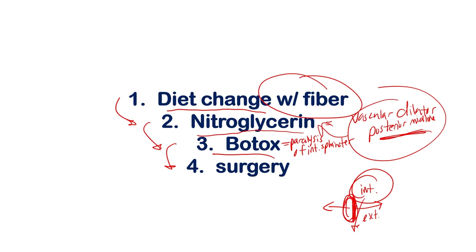The last option is surgery, used in really extreme cases. You don't need to know the specifics for Step 1, but basically they take a flap of skin, cut it in a way that covers up the fissure, stopping its exposure to the outside and allowing it to heal.